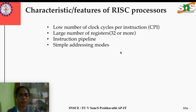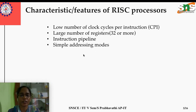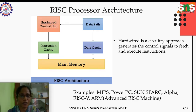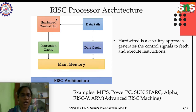RISC also has simple addressing modes — various ways of fetching operands from memory. These are the four important main features of RISC architecture. The main part of the RISC block diagram is the hardware control unit, which is a circuitry approach to generate control signals that help fetch the respective instructions and data.